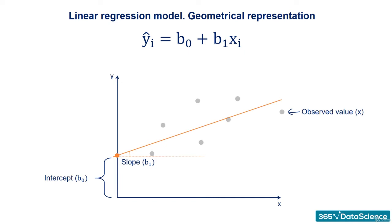The distance between the observed values and the regression line is the estimator of the error term epsilon. Its point estimate is called residual.